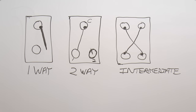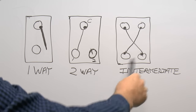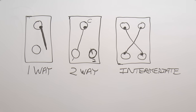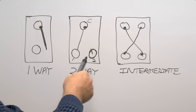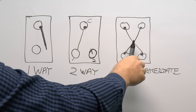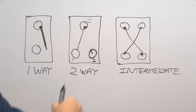Terminals on intermediate switches vary quite a bit — on some it's just one, two, three, four, or you might have one-one and two-two, or various other combinations. It doesn't particularly matter as long as it's identifiable which is which. You can also use an intermediate switch as just a two-way switch by using three of the terminals, or as a plain one-way switch by using just two terminals.